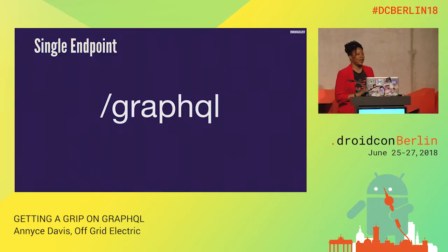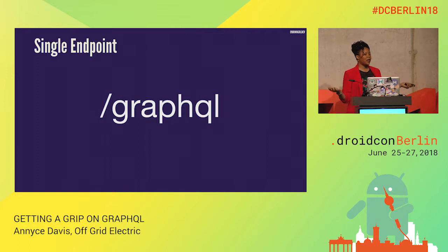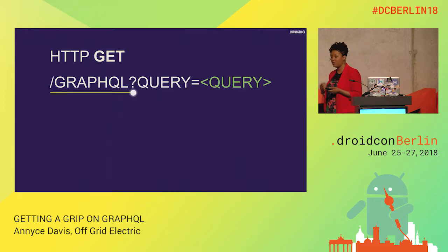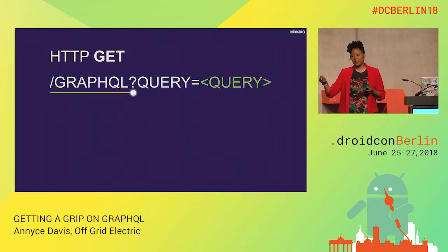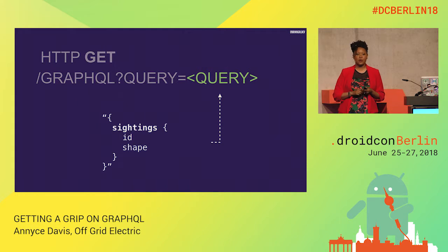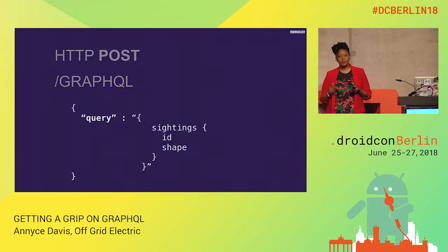The first thing to note about a GraphQL server is that there's a single endpoint — typically slash GraphQL — that's used to handle all of your requests. You can make an HTTP GET request to that endpoint and pass your query parameter as a GraphQL query string. You could also make a POST request, using a JSON object with a query property and your query as a string.